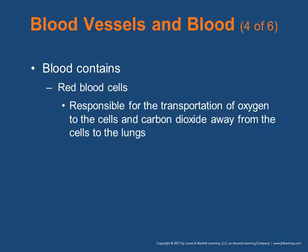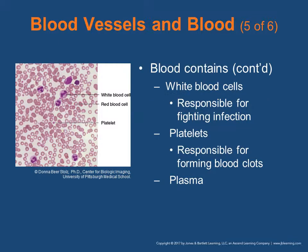Blood contains red blood cells, which are responsible for the transportation of oxygen to the cells and carbon dioxide away from the cells to the lungs. Blood also contains white blood cells, which are responsible for fighting infection, and platelets, which are responsible for forming blood clots and are a huge part of our clotting cascade, and then plasma.